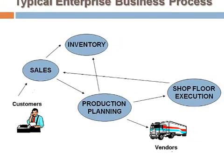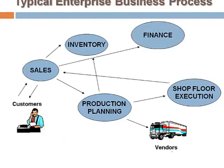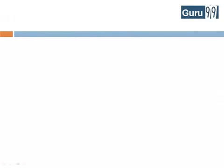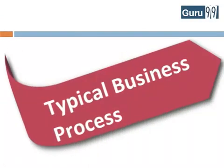Once ready, the shop floor team forwards the goods to the sales team, who in turn deliver it to the client. The sales team updates the finance department with revenue generated by the sale of the product. The production planning team updates the finance department with payments to be made to different vendors for raw materials. All departments approach HR for any human resource related issue. That is the typical business process of any manufacturing company.